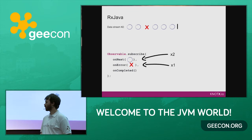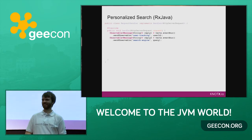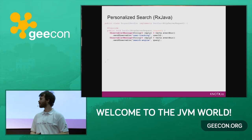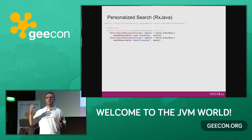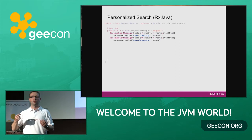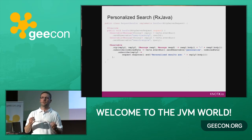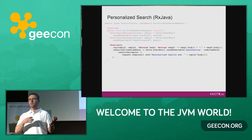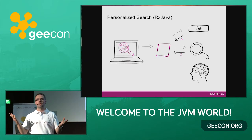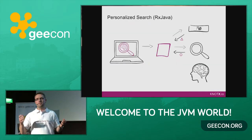Let's see how the smart search snippet looks with RxJava. I define two Observable objects — one for user data service and one for search service. Then I use the zip operator, which combines responses from both services. Finally I've got a response from the first service, a response from the second service, and I can call my algorithm. I call two services at the same moment — quite simple.